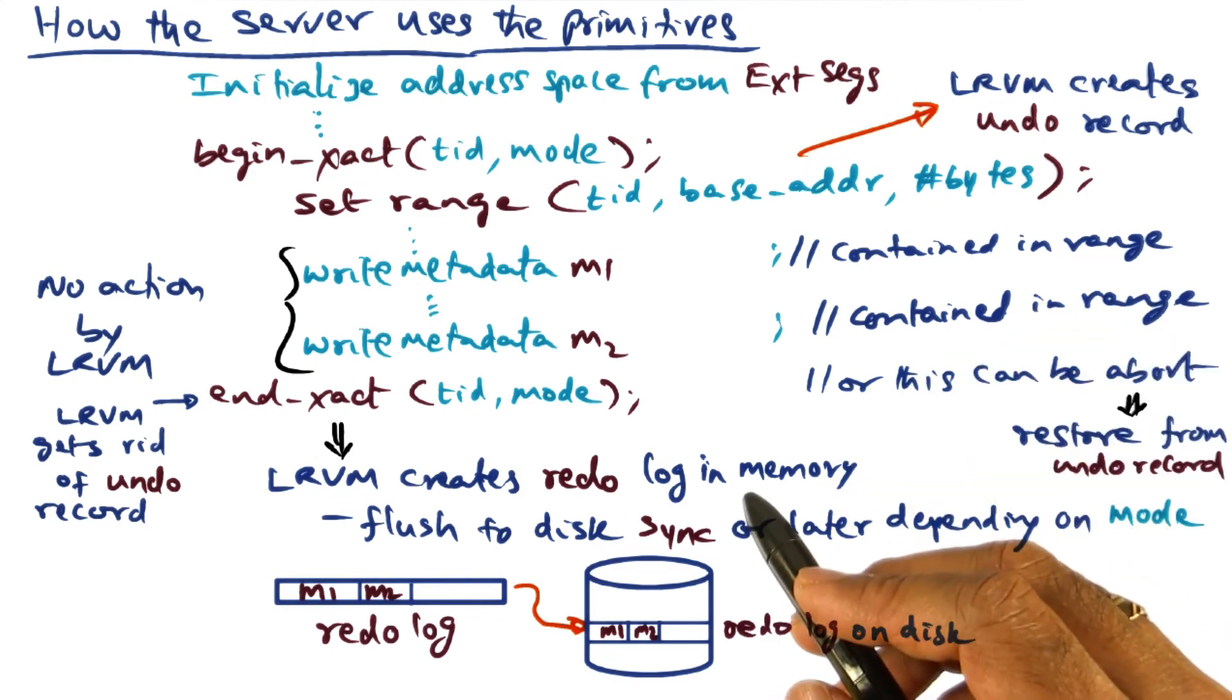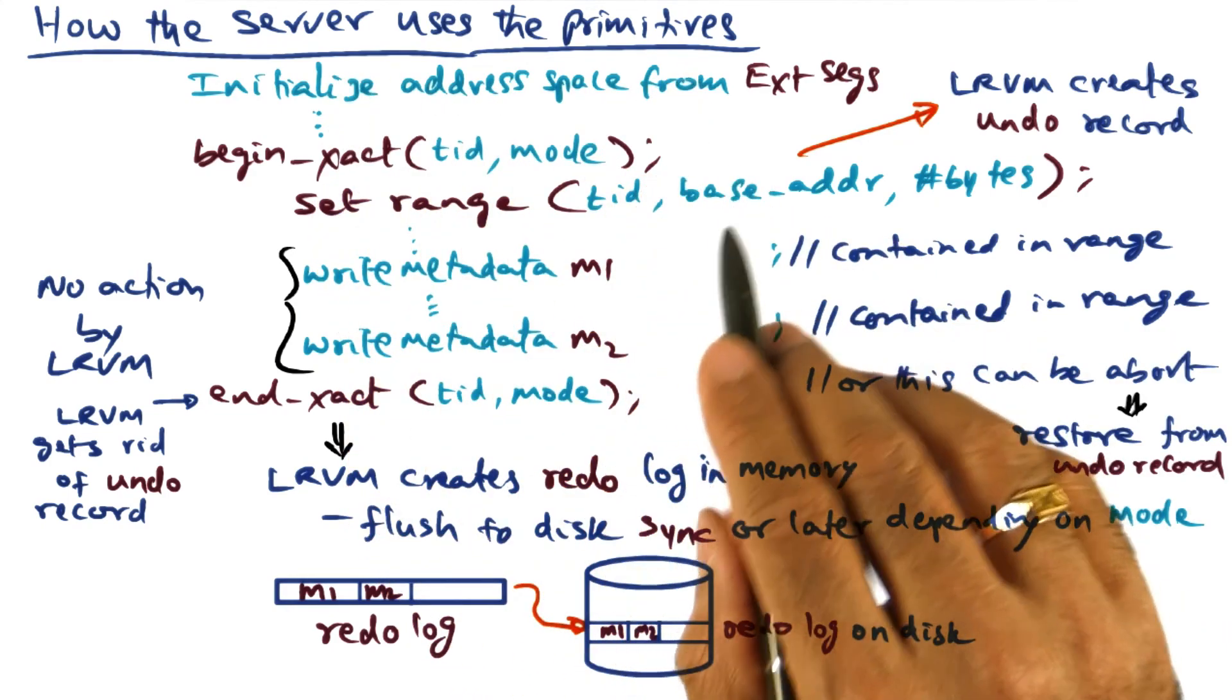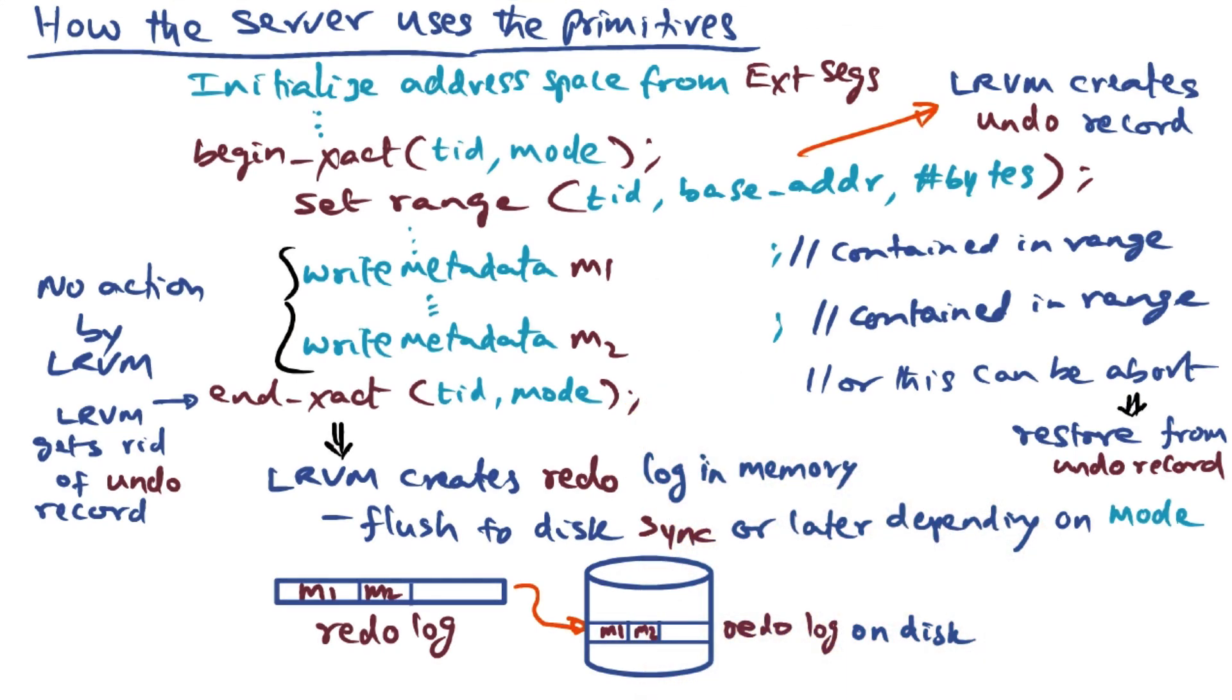So that, in a nutshell, is how you would use the primitives provided by LRVM in constructing a server that has certain persistence requirements.